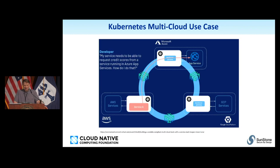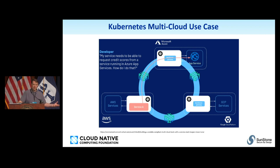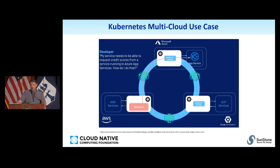A typical multi-cloud use case that idealizes how things should work — and represents real-world scenarios — is having a service on Amazon that a developer group is spinning up, needing to talk to analytical data or APIs on Azure, which itself is pulling in data from a machine learning stack run on Google Cloud. Those are very real scenarios today, especially in healthcare and financial services, so you've got to have a strategy to adopt and adapt to that.